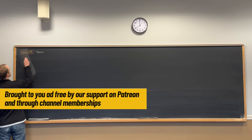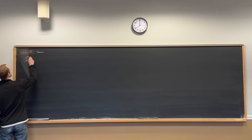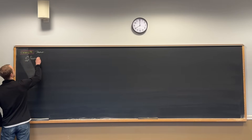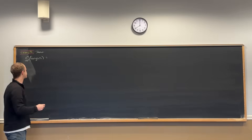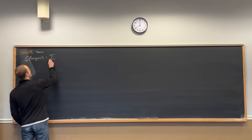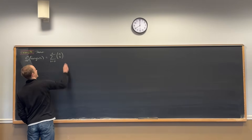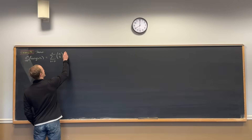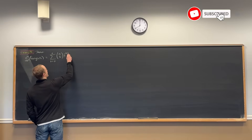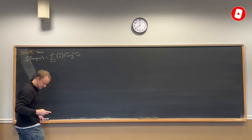Let's show that the nth derivative with respect to x of a product f(x) times g(x) is equal to the sum as k goes from 0 to n of the binomial coefficient n choose k, then the kth derivative of f, and then the (n minus k)th derivative of g.